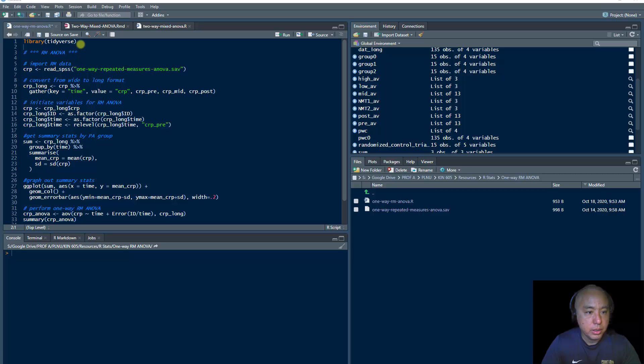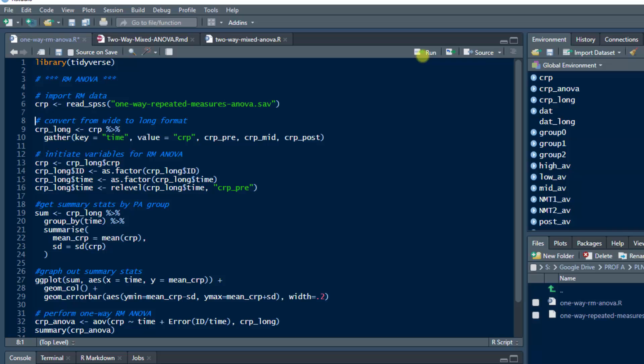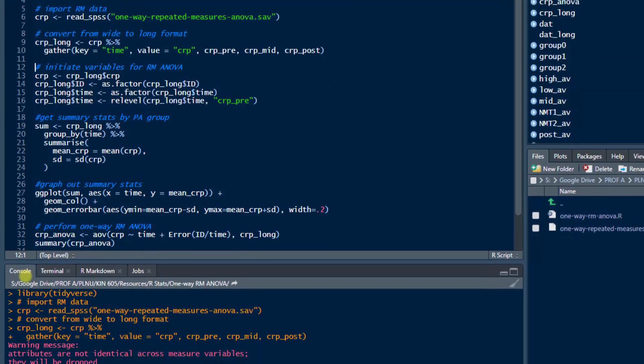So I already loaded the one-way repeated measures ANOVA dataset. This is the CRP dataset in RStudio. I'm just going to run the library, make sure I have the tidyverse library loaded. I am going to assign the data that is usually in SPSS format to the data frame or data vector called CRP.